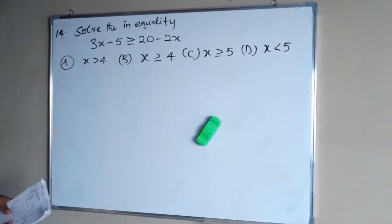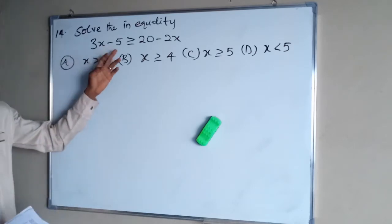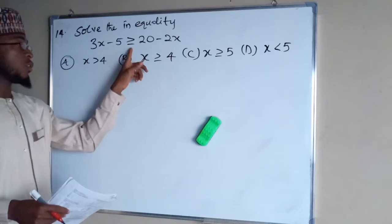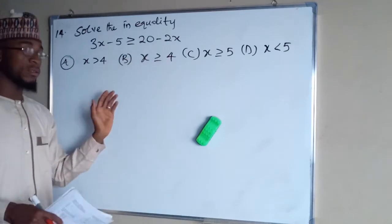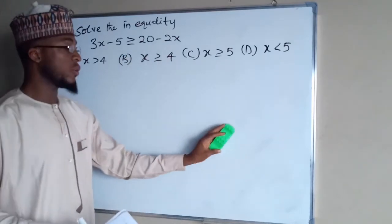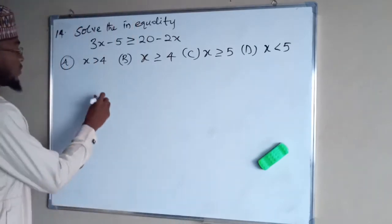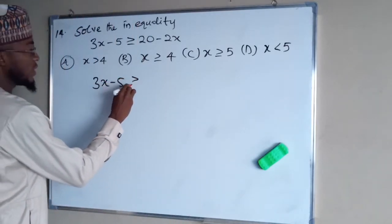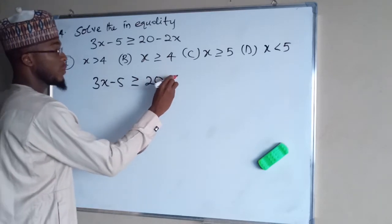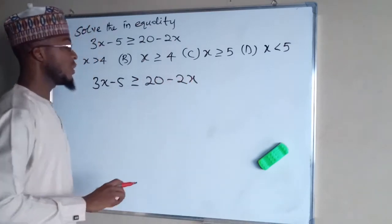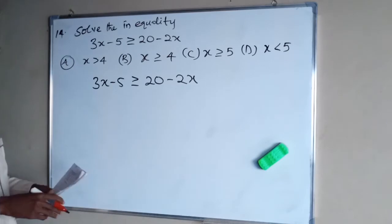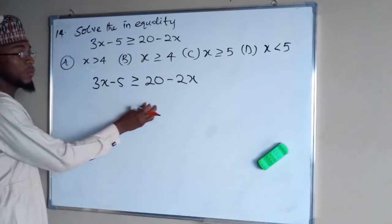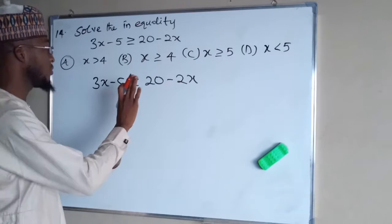Question number 14. Solve the inequality: 3x minus 5 greater than or equal to 20 minus 2x. To do that, we write 3x minus 5 ≥ 20 minus 2x. The only thing to do is collect like terms — we have 3x on the left and minus 2x on the right.